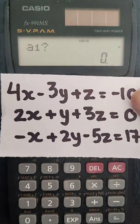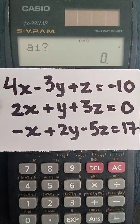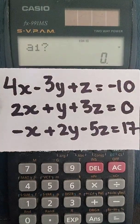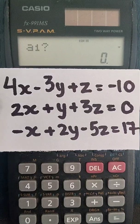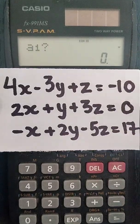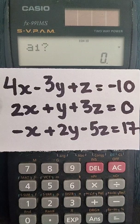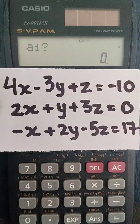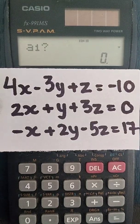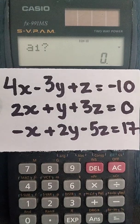So by putting it into the format, the format is 4x minus 3y plus z equal to minus 10, 2x plus y plus 3z is equal to zero, then minus x plus 2y minus 5z equal to 17.